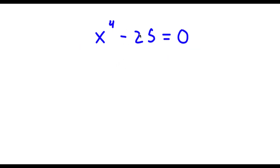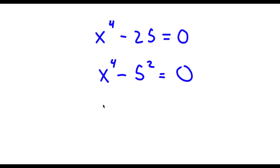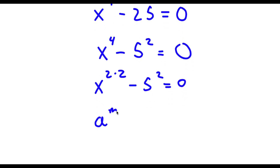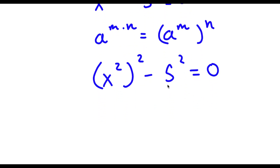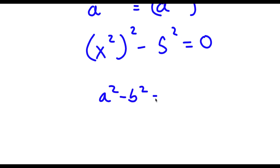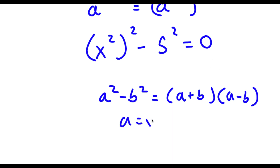Alright, so I have x to the power of 4 minus 25 is equal to 0. To start, I'm going to rewrite 25 as 5 to the power of 2, so now I have x^4 minus 5^2 is equal to 0. Now x^4 is the same thing as x to the power of 2 times 2, and a to the power of m times n is the same as a to the power of m to the power of n, so x^(2×2) equals (x^2)^2. So I have (x^2)^2 minus 5^2 equals 0. Using the difference of squares — a^2 minus b^2 equals (a+b)(a-b) — where a equals x squared and b equals 5.